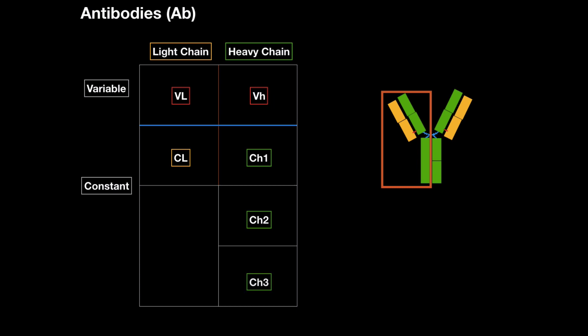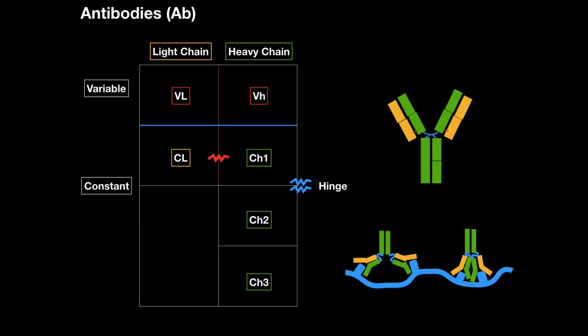The CL and CH1 is connected through disulfide bonds, and there are also bonds here connecting the two parts of the antibody, and they form this hinge region. The hinge is really important because it allows the antibody to bind to antigens much efficiently, as you see right here in this picture.